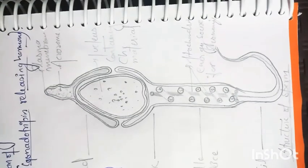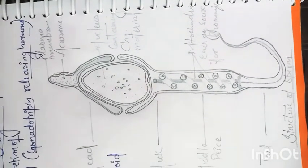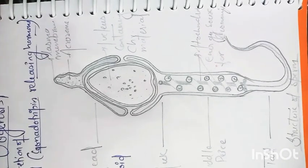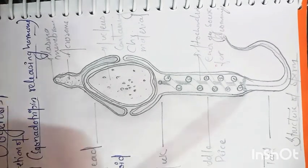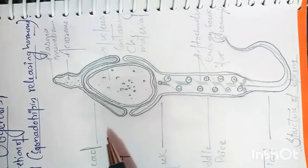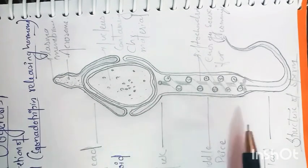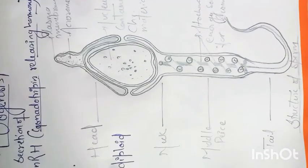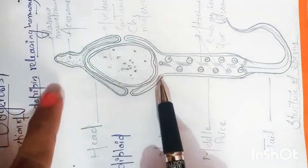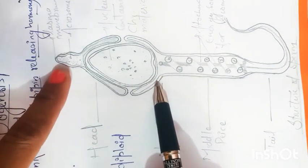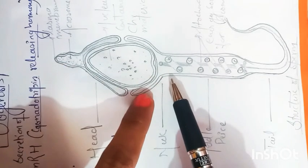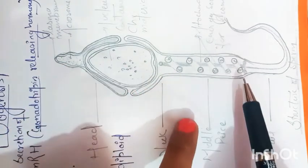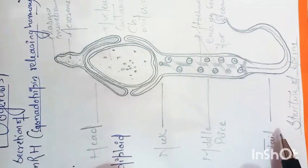Here I have mentioned a diagram that is the structure of sperm. Sperm is divided into four basic structures or parts: first one is the head part, next one is the neck part, then the middle piece, and the final is tail.